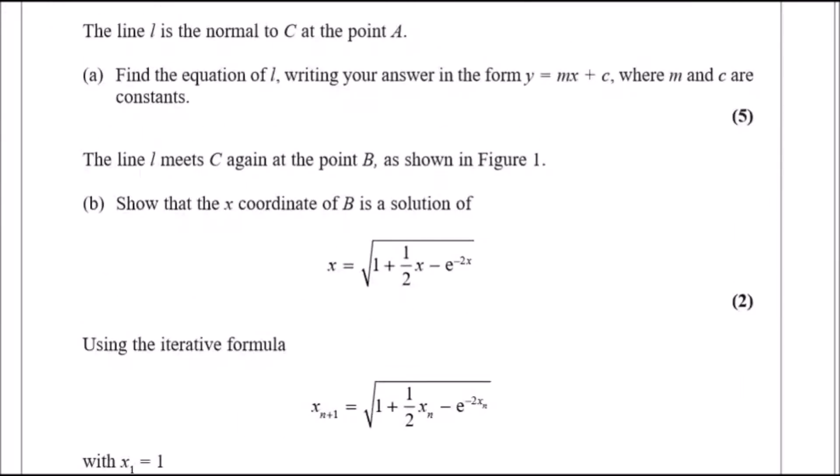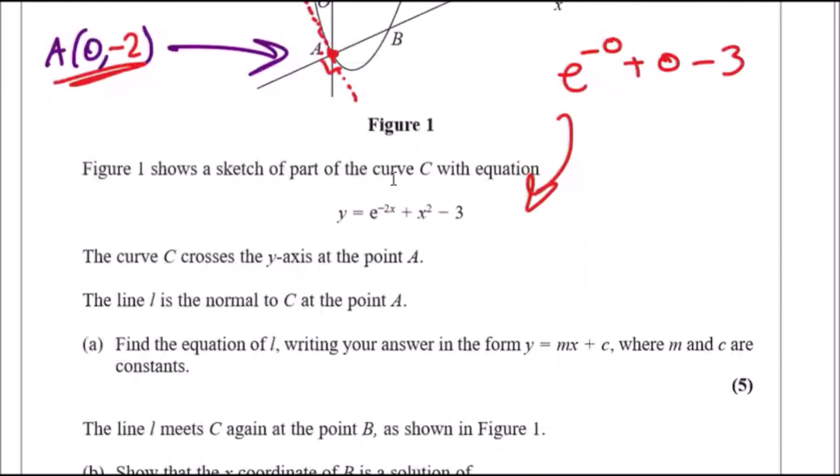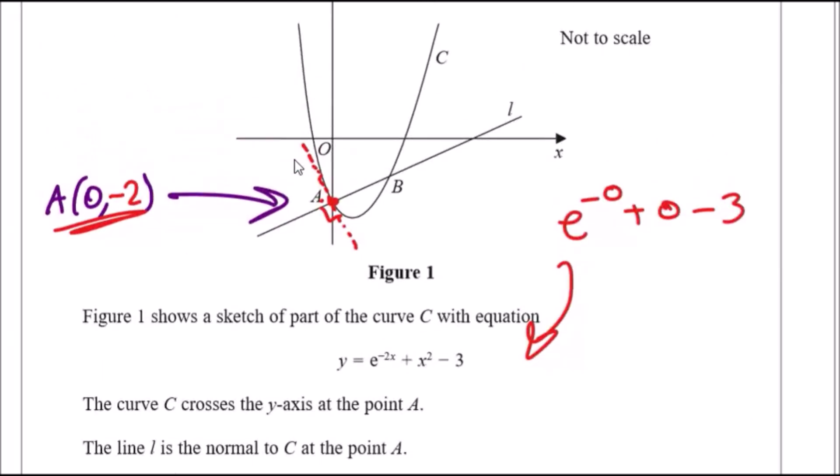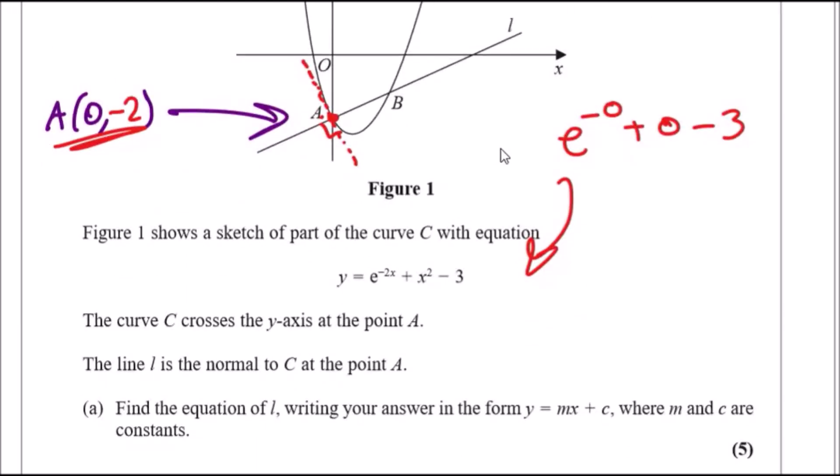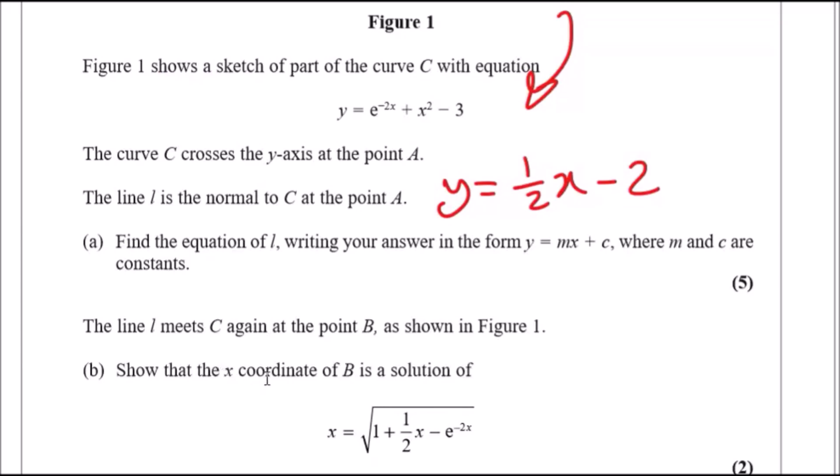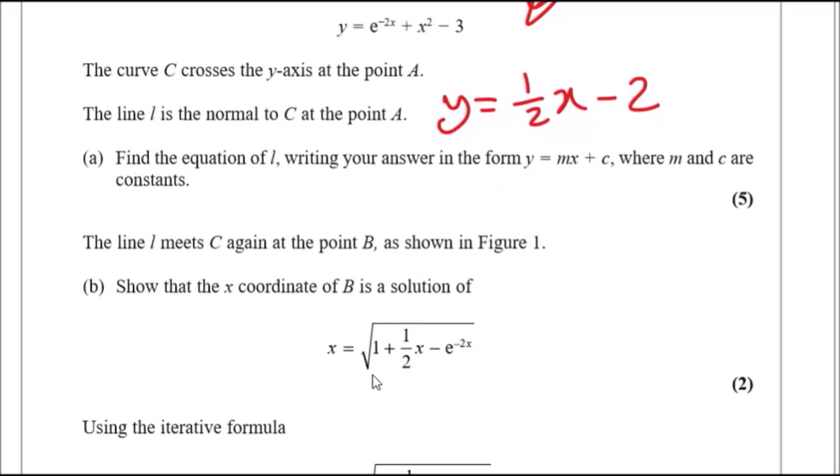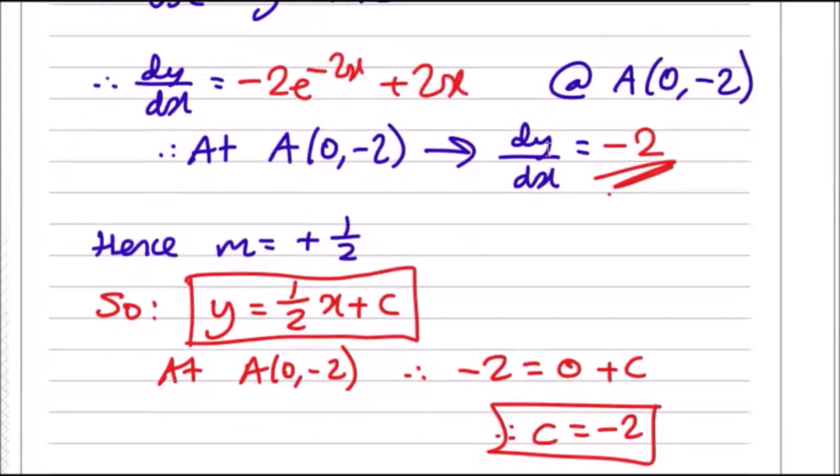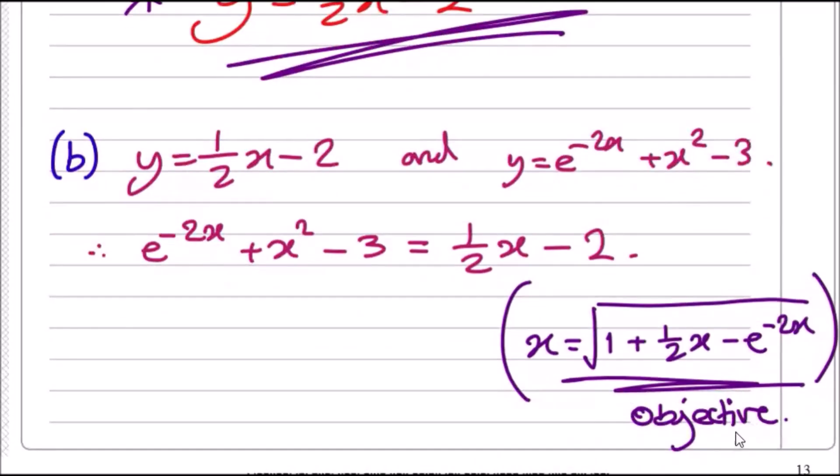Let's look at part b. The line l meets C again at point B. We're talking about this point here. This is simultaneous equations. Since we've got the line which is y = (1/2)x - 2, we're going to solve this simultaneously. Now show that the x-coordinate of B is a solution of this one. All they're doing here is rearranging these two equations, but not technically solving for x because we have x in multiple places.